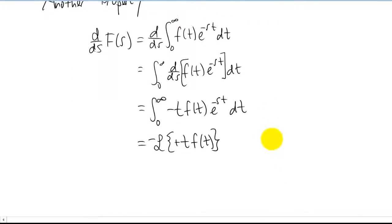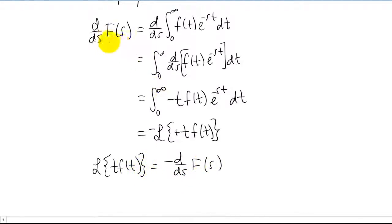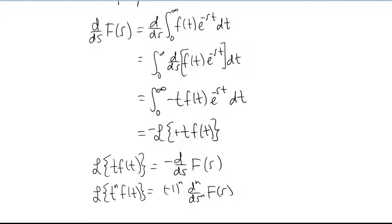Here is the new property we just came up with: taking the Laplace transform of t times some function means you can take the Laplace transform of just f(t) — that gives you capital F(s) — and then take a negative derivative with respect to s. This concept can actually be expanded because every time we take a derivative with respect to s of our Laplace transform, we pull down a factor of negative t in our integral. That gives us the general formula: multiplying a function by t n times means taking the Laplace transform is the same as taking n derivatives of F(s), with a possible negative sign depending on whether n is even or odd.